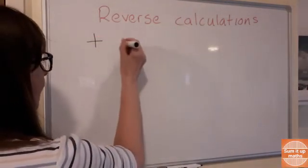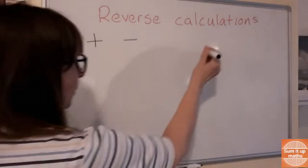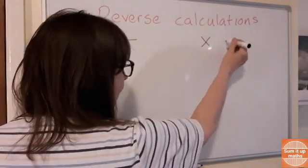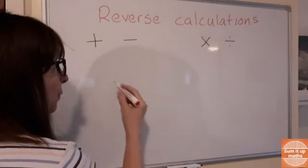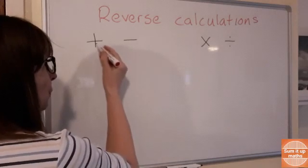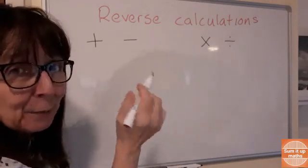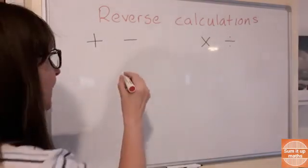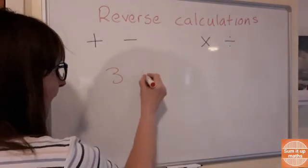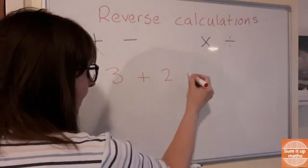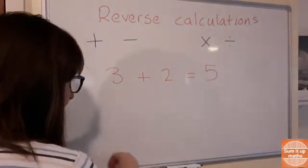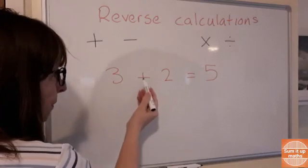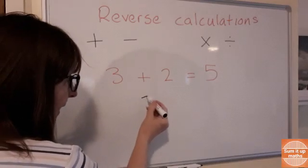The opposite of add is takeaway and the opposite of times is divide. If we're in our exam and we have a sum which we add, I'm going to use easy numbers here so we can just focus on the concept. If we had 3 add 2 equals 5, our reverse calculation will be the opposite of add, it will be the takeaway.